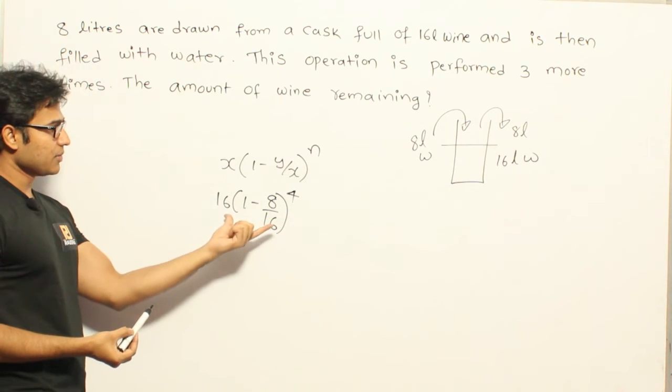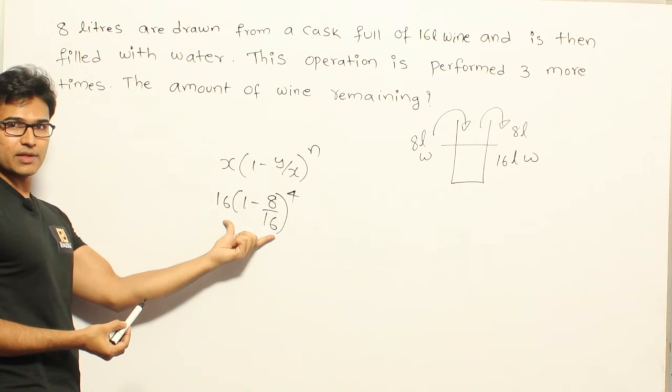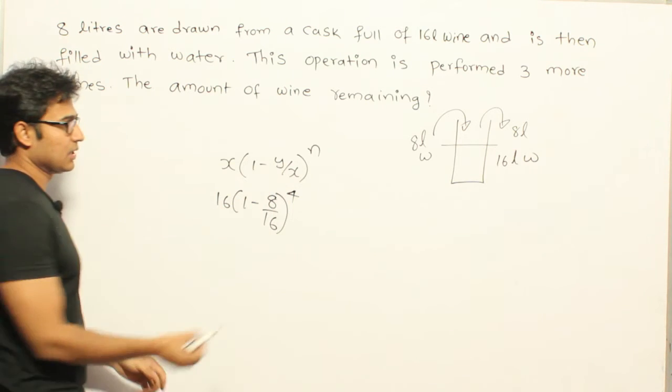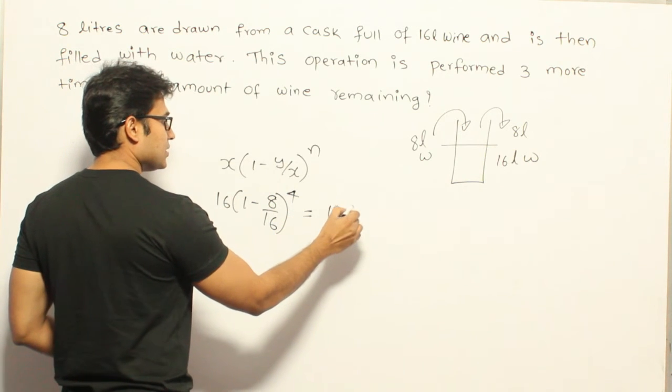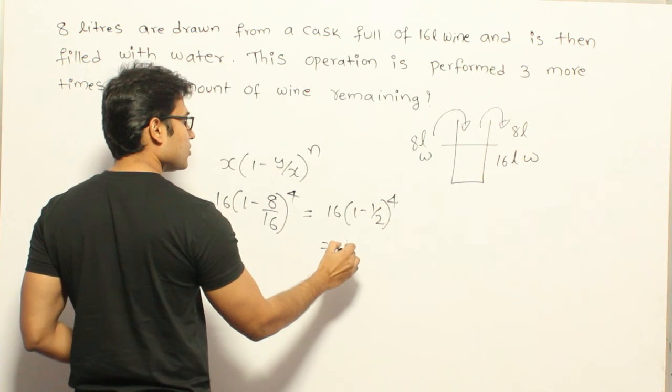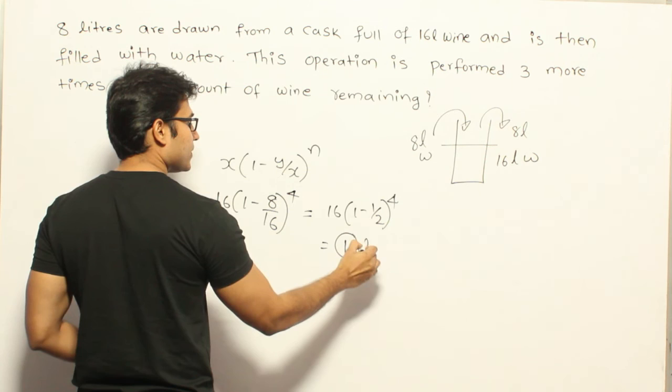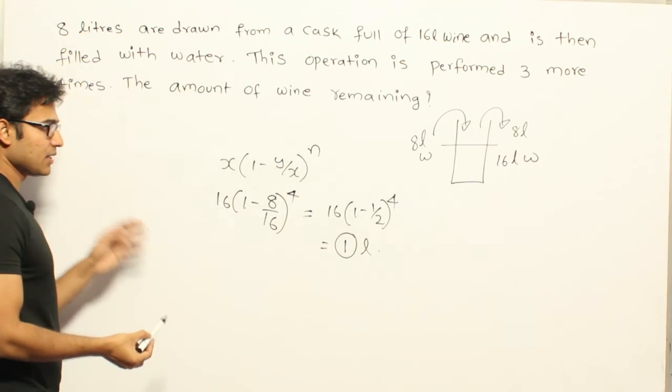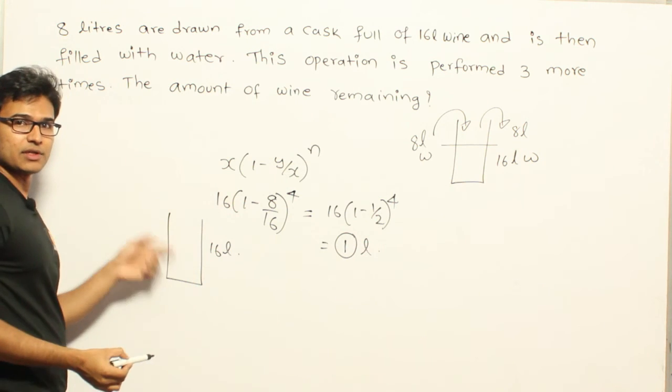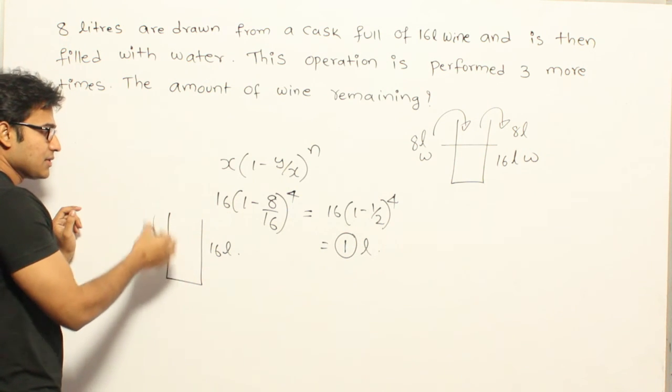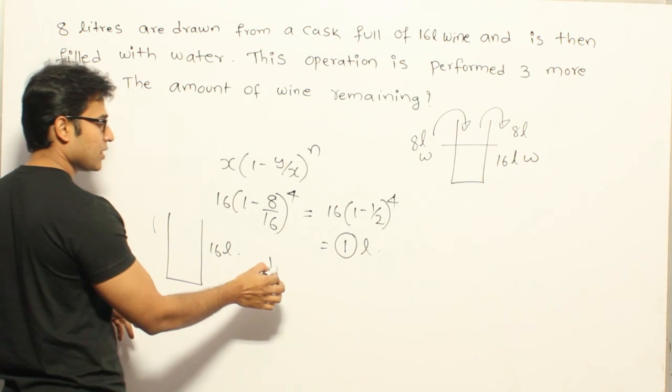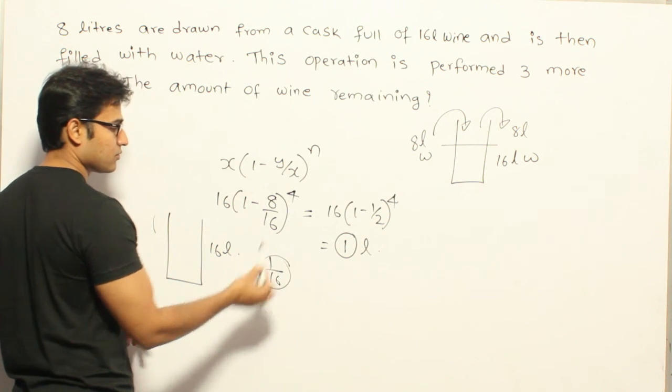Therefore this is what is asked. So this will be the amount of wine remaining in the mixture if you are going to do this operation 4 times. Now what is it? It is 16 into (1 minus 1 by 2) whole power 4, which is going to be 1 liter. Which means in the final mixture if you see it, it is going to contain 16 liters only, 16 liters of the mixture. But then out of all the 16 liters there will be only 1 liter of wine present, which means the concentration of wine by the end will be 1 by 16 of this.